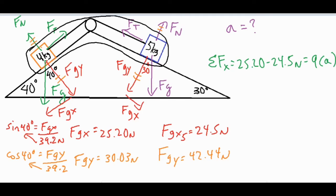If we do the algebra for that, we're basically going to divide both sides by 9, and our acceleration is going to be 0.08 meters per second squared. So it's not going to get very much acceleration because this 25.20 does not exceed this 24.5 by much.